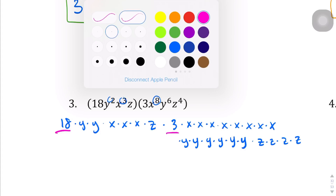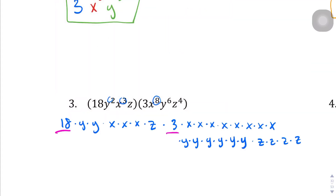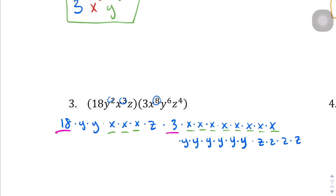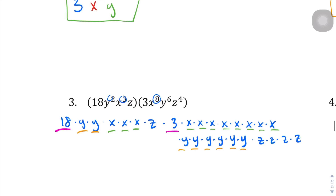And then the Y's. Let's go with the X's first. I've got 1, 2, 3, 4, 5, 6, 7, 8, 9, 10, 11 of those. And then the Y's: 1, 2, 3, 4, 5, 6, 7, 8 of those. And then lastly, I've got 1, 2, 3, 4, 5 Z's. So let's rewrite all that.